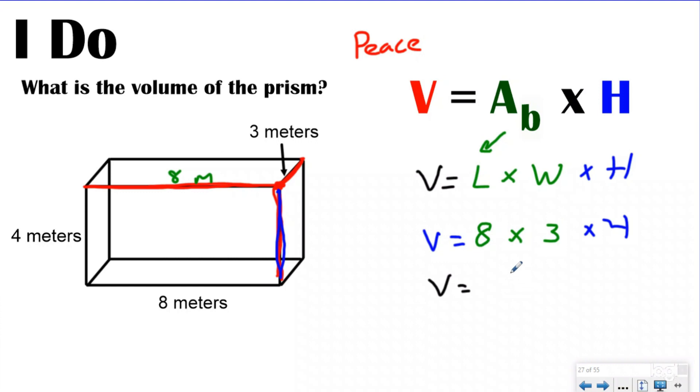And then I'm going to have four layers of that. So my volume is going to equal 24 meters squared. That's going to be the area of my base times the four. So I have four layers of 24. So I multiply 24 times 4, I get 96 cubic meters.